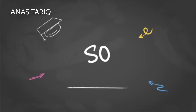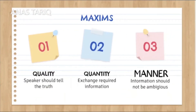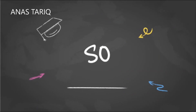So this is all about the four maxims: quality, quantity, manner, and relation. Maxims are the baseline in conversation and communication. These maxims are not best regarded as rules but as principles for effective communication. Individuals may choose to float or violate the maxims.